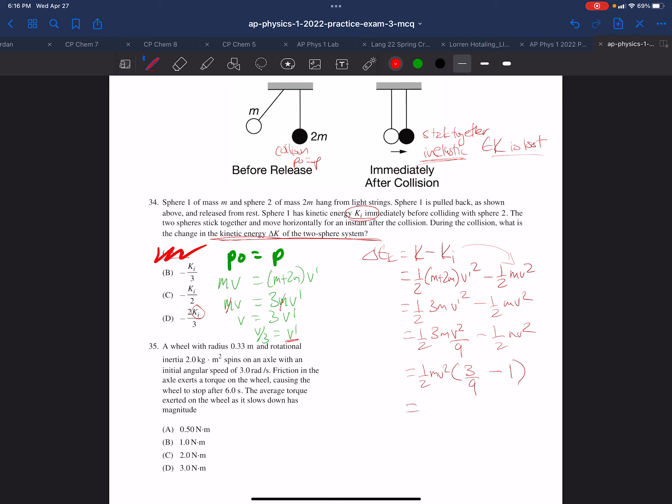That leaves 3 over 9 minus 1. Now 1 half mv squared is k initial. And 3 ninths minus 9 ninths is 6 ninths, so you have minus 6 ninths. So that gives us, and we reduce that fraction, minus 2 thirds k i. That is the change in kinetic energy and that's why D is the correct choice.